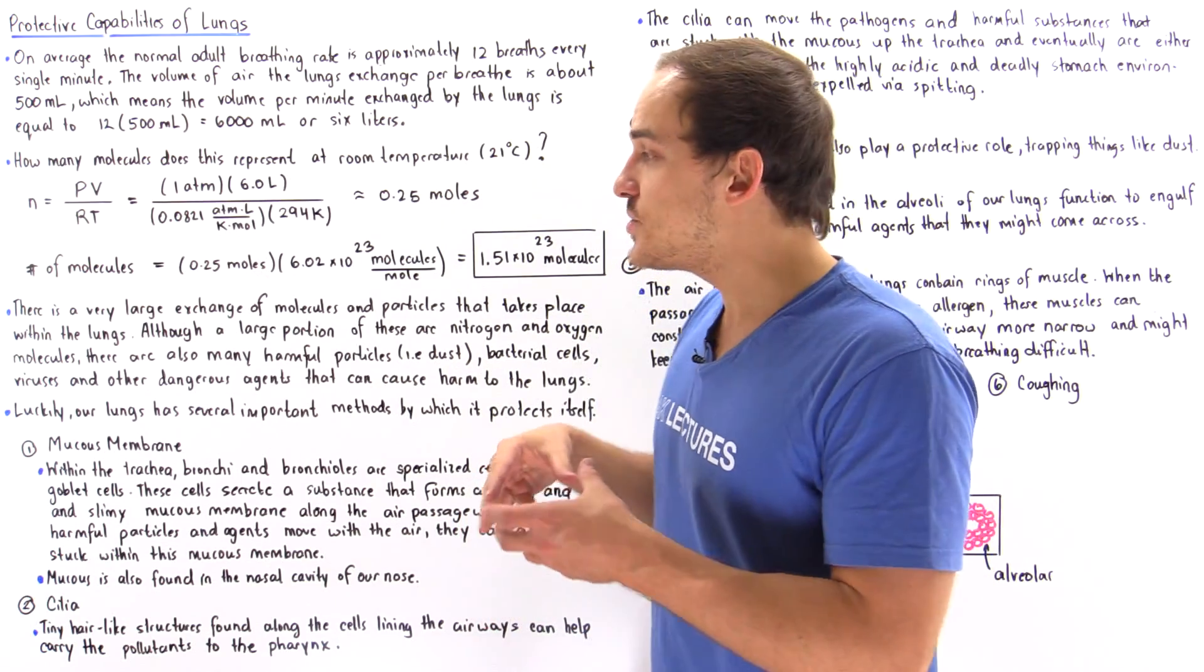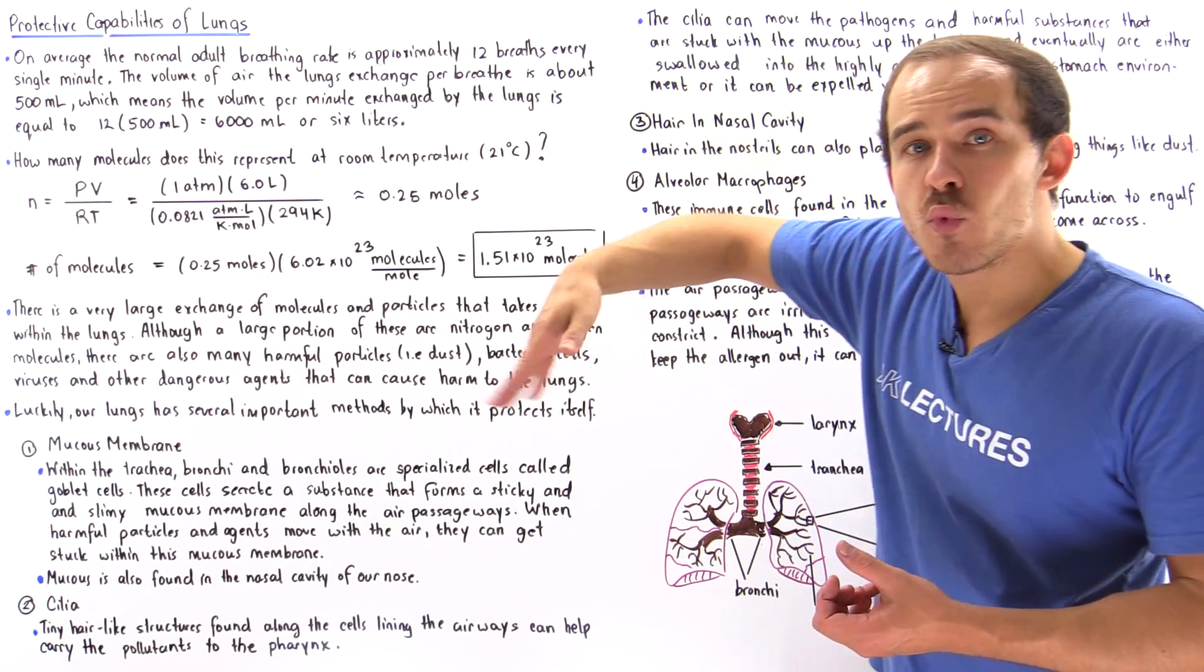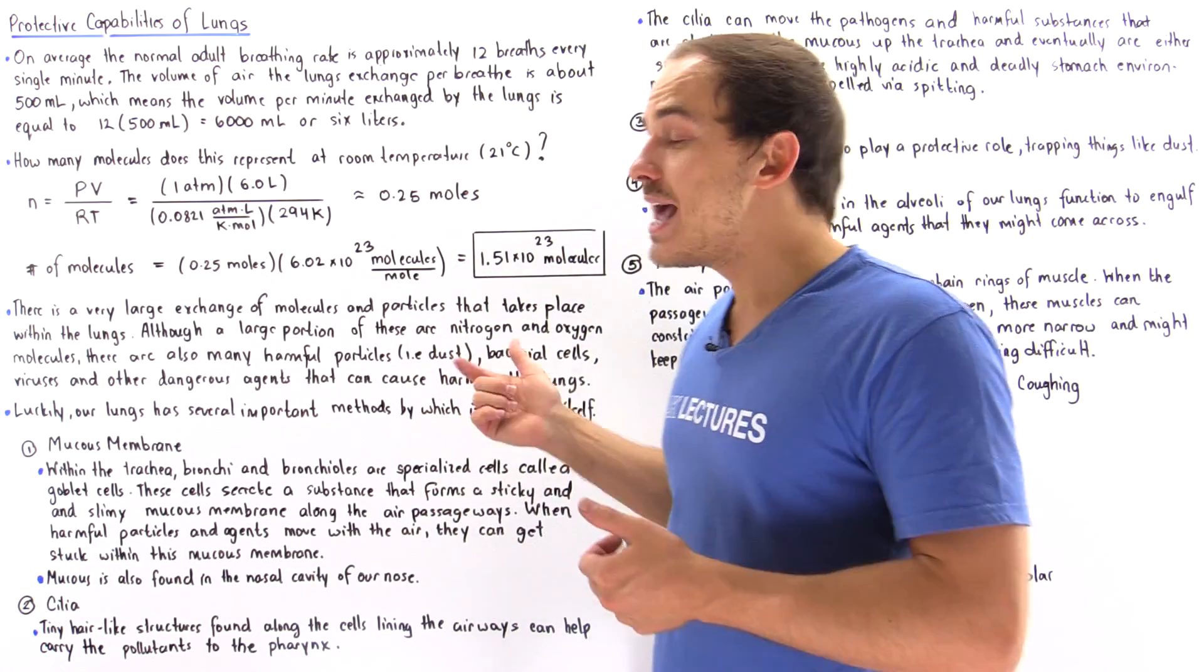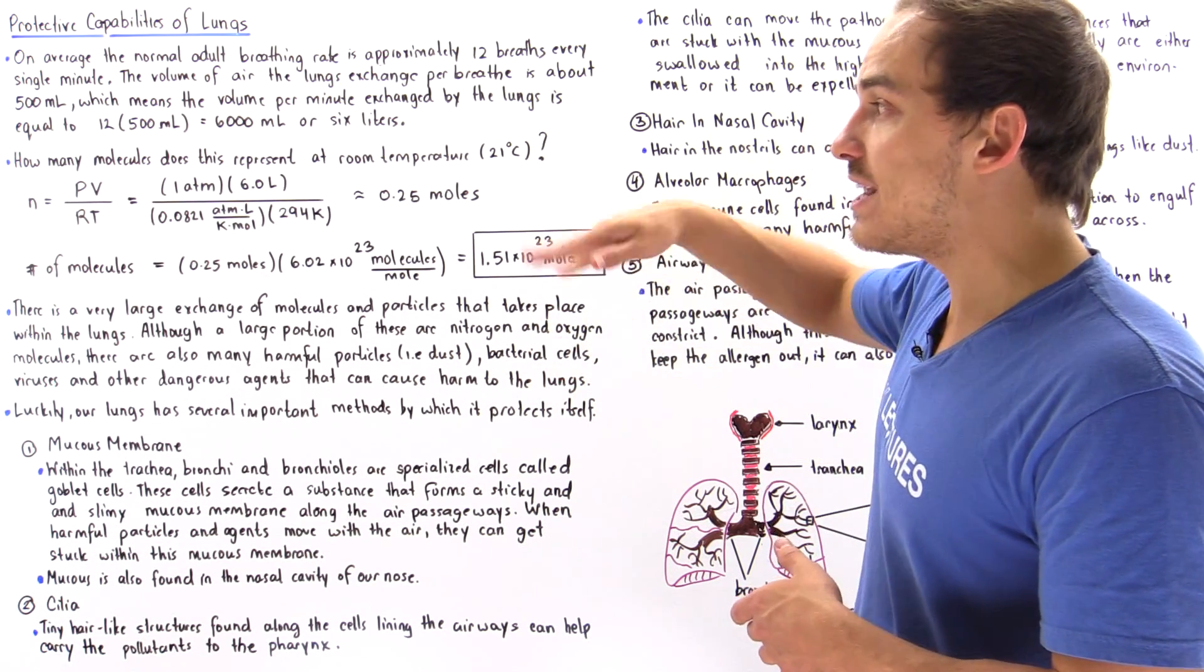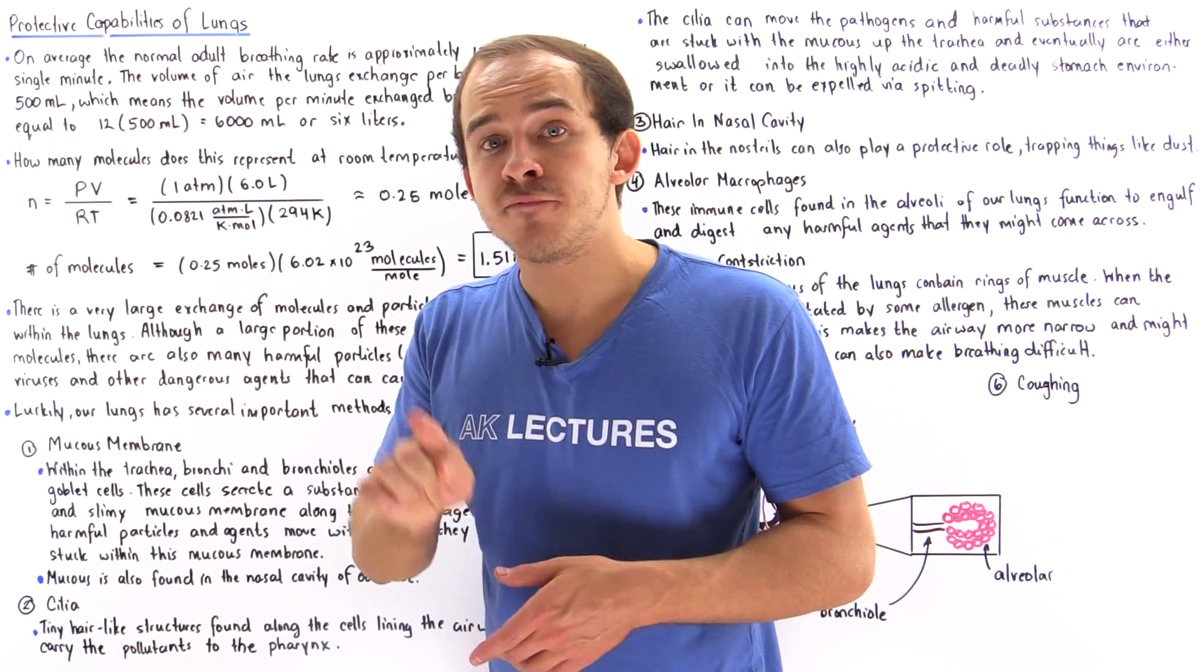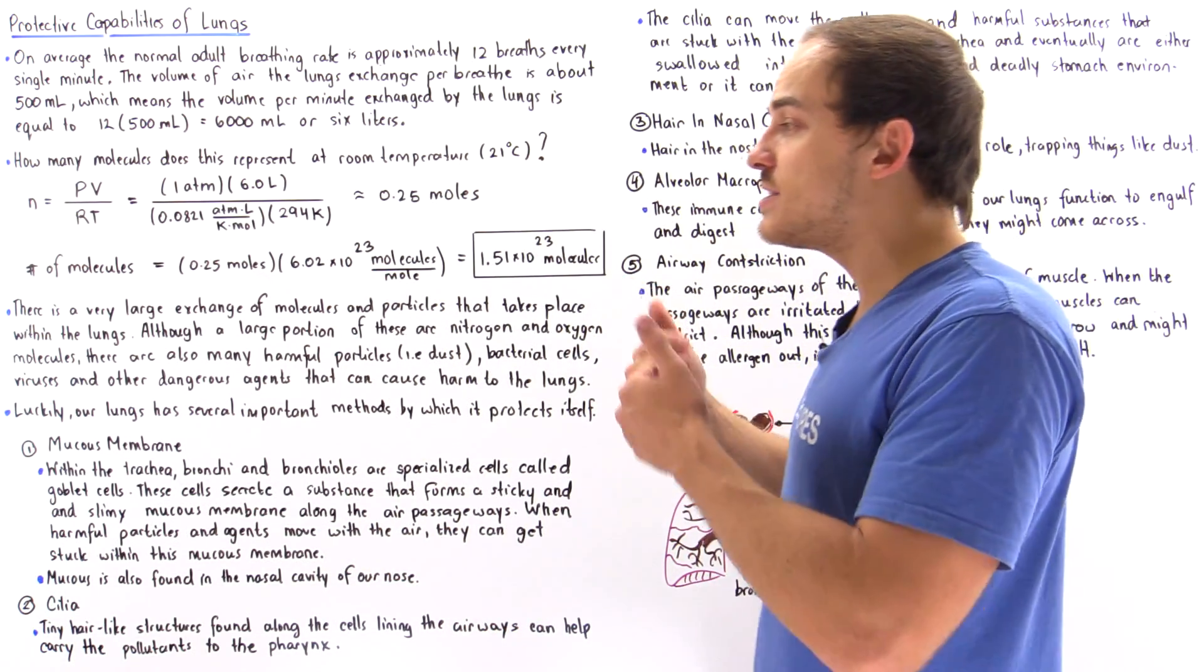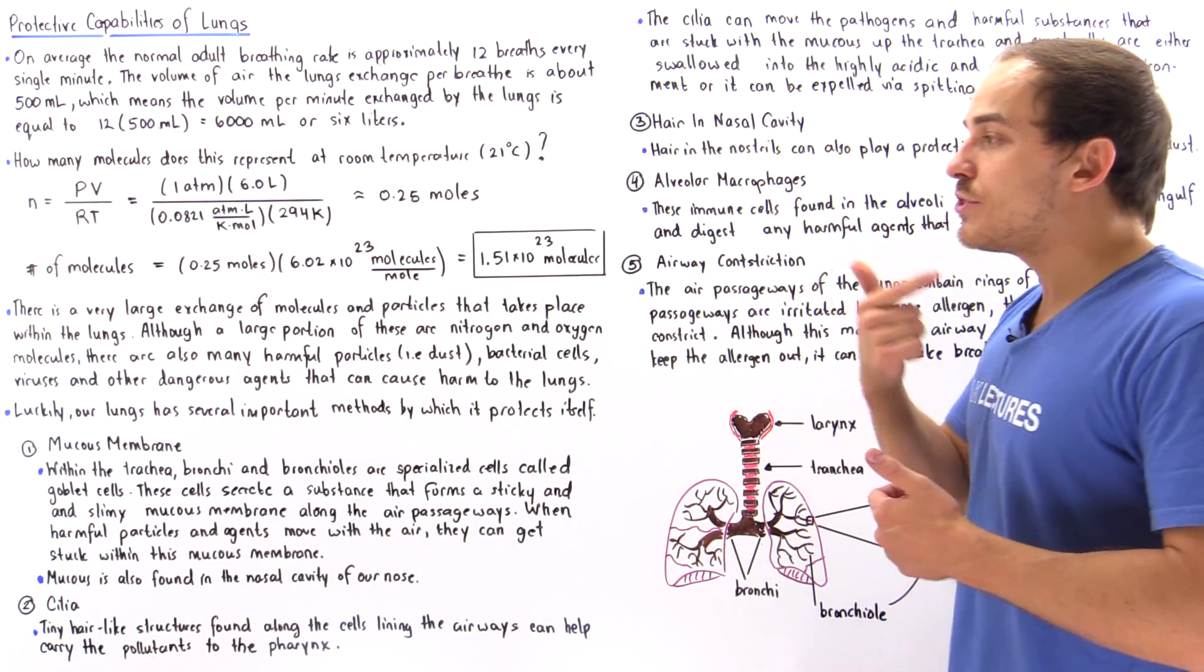Number two: we also have these hair-like structures that can move in a wave-like fashion. They are found along the cells that line our passageways. As the cilia move in a wave-like fashion, they can move those harmful things that get stuck inside the mucous back out into our larynx.